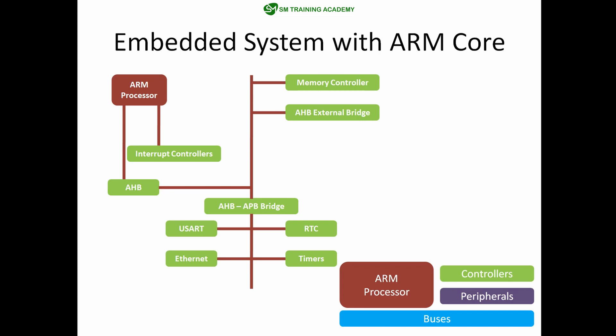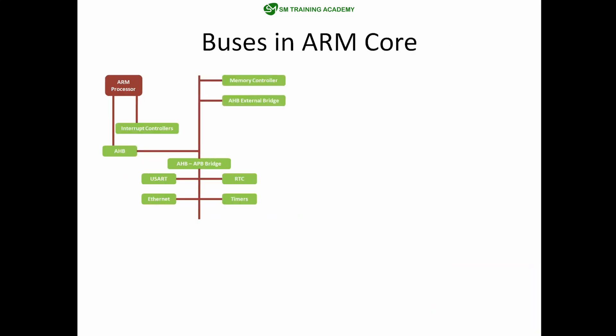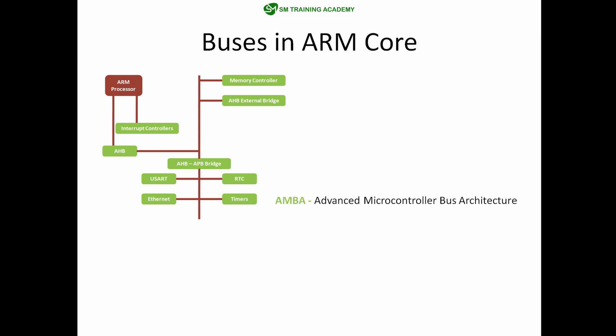This is the basic structure of a microcontroller with an inbuilt ARM processor. Now let's look in detail at the buses available in ARM processors. There are two kinds of devices on the buses: the bus master and the bus slave. The bus master is a logical device that initiates data transfer, while the bus slave can only respond to requests from the bus master and transfer the requested data.